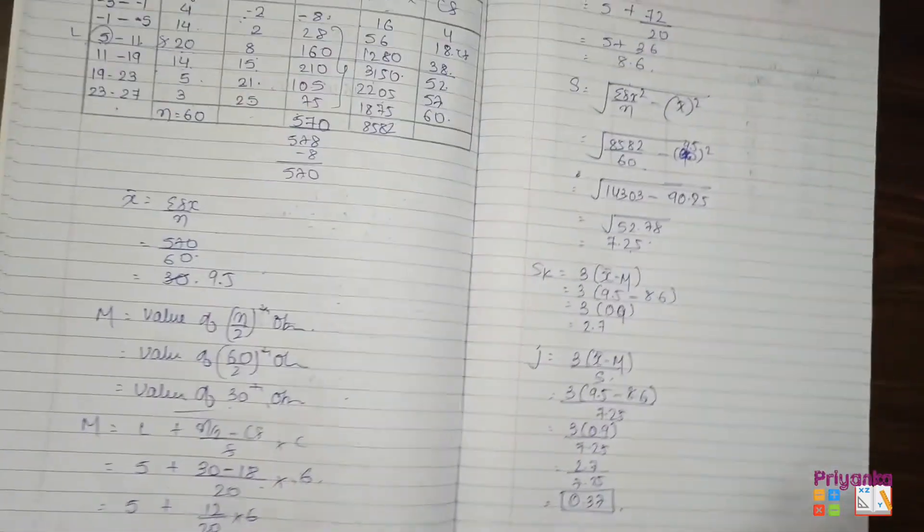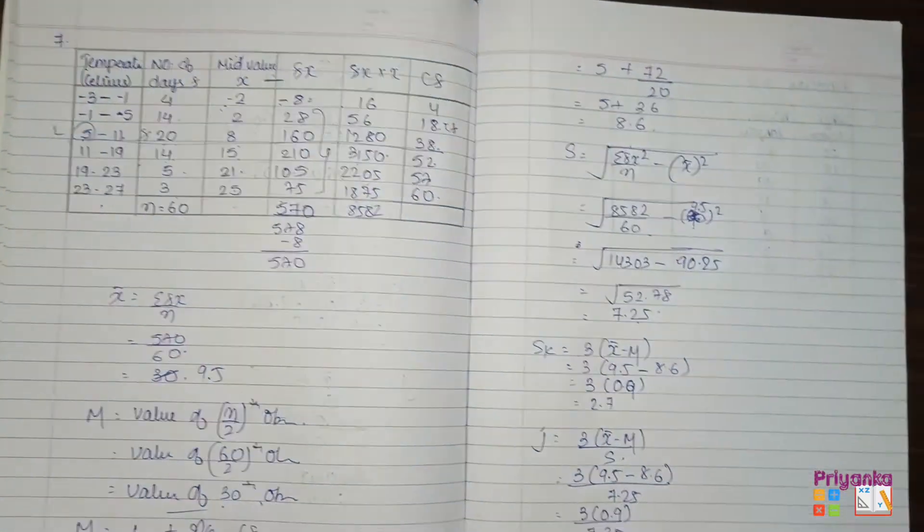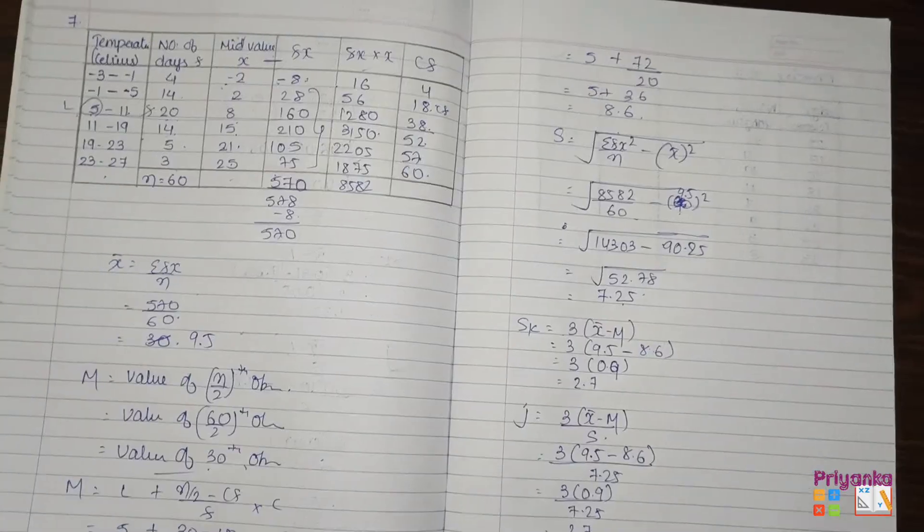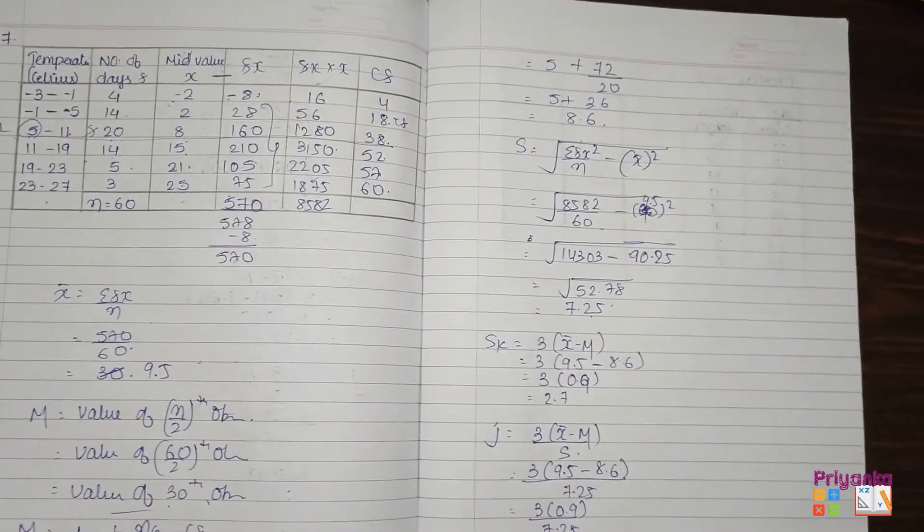And here we complete the Karl Pearson method with the exercise 5.1. See you in the exercise 5.2 with the Bowley's method.